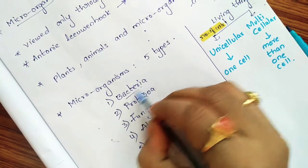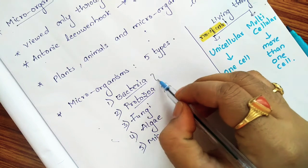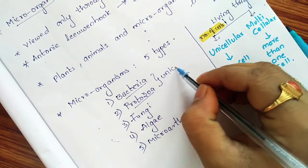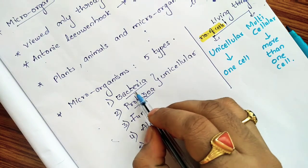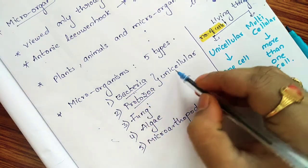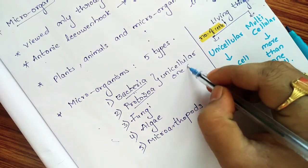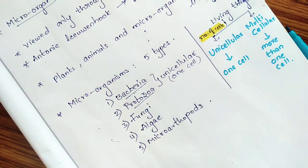For example, bacteria and protozoa—both are unicellular microorganisms. This means bacteria and protozoa contain only one single cell in their body structure.